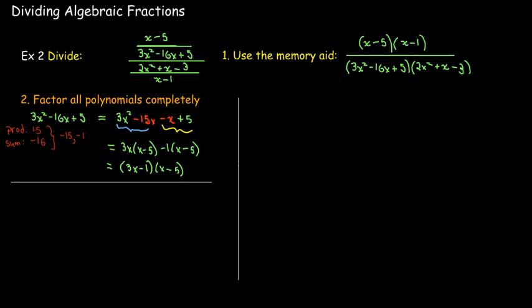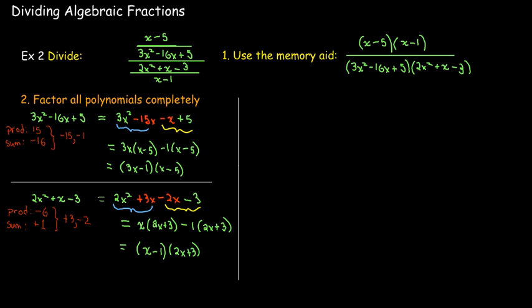So I'll replace the negative 16x with negative 15x and negative x and then factor by grouping. And then for 2x squared plus x minus 3, I'll do a similar process. I need two numbers that multiply to make negative 6. Remember, the way we got negative 6 is 2 times negative 3. And then the sum is going to be plus 1. Because remember, plus x is the same as plus 1x.